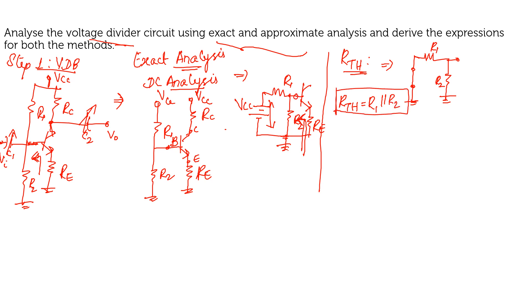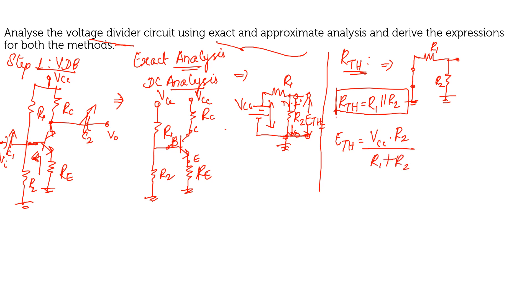To find ETH, open-circuit the output. ETH is found by applying the voltage division rule: ETH equals VCC into R2 divided by R1 plus R2. Now you have obtained the Thevenin's equivalent voltage.